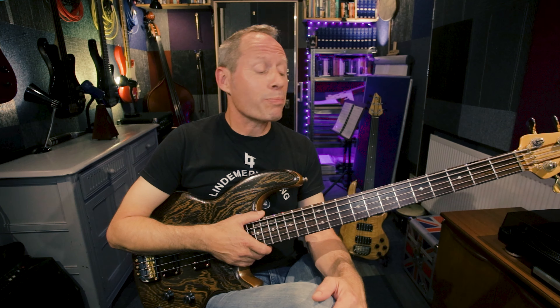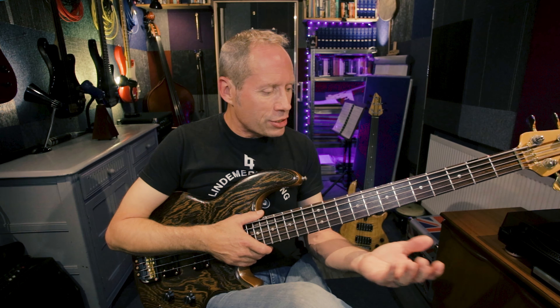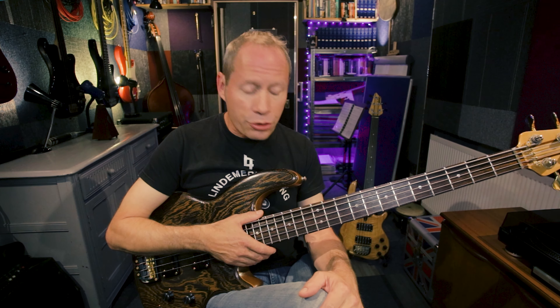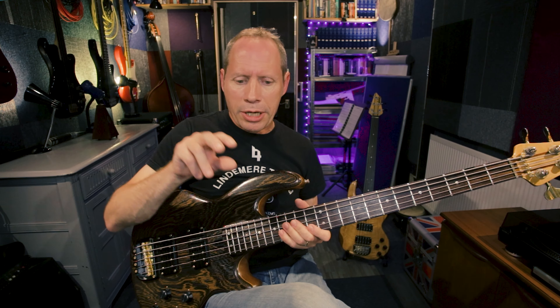Did you figure out what the connection was between all five bass lines? If you said triads, you'd be dead right. Each one of those bass lines was using triads — either major or minor, or sometimes a mixture — in different ways. There are four types of triad: we've already looked at major and minor.